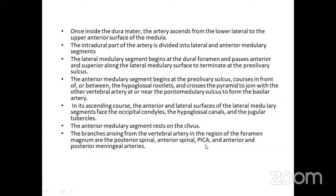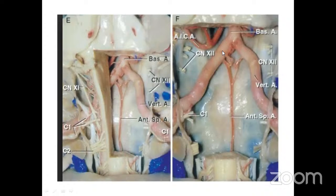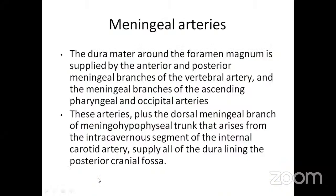Inside the dura, the vertebral artery extends from the lower lateral to the upper anterior surface of the medulla. The intradural V4 segment is divided into a lateral medullary segment (from the dural foramen to the pre-olivary sulcus) and an anterior medullary segment (from the pre-olivary sulcus, crossing the pyramids to join the contralateral vertebral artery at the pontomedullary sulcus). The anterior medullary segment rests on the clivus. Branches include the posterior spinal artery, anterior spinal artery, PICA, and anterior and posterior meningeal arteries. The dura around the foramen magnum is supplied by meningeal branches of the vertebral artery, ascending pharyngeal artery, occipital artery, and the dorsal meningeal branch of the meningohypophyseal trunk.